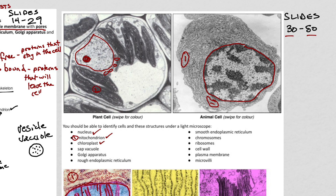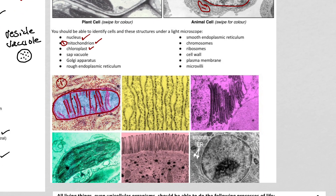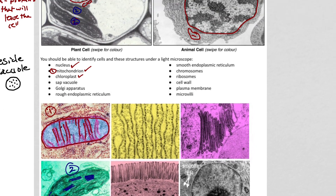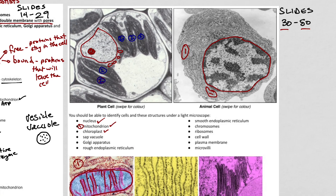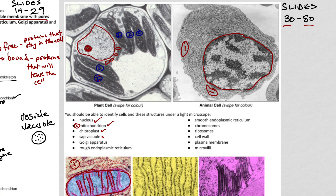Our chloroplasts are found in the plant cell — we've got all kinds of chloroplasts over here. You can tell a chloroplast because it'll have these stacks — remember our thylakoid membranes, stacks of thylakoid membranes on the inside. We've also got our sap vacuole, which is just a really large vacuole inside our plant cell, with a lot of water and sugar in there — that's why it's called sap.